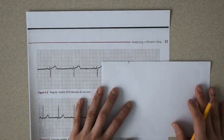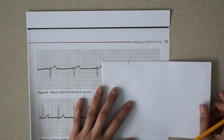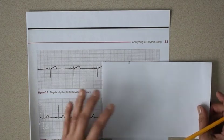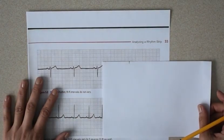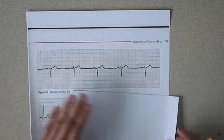By textbook, the regularity of a rhythm is determined by three small squares or more is an irregular rhythm. And so in this case, this being one and a half to two small squares of variability, this rhythm is regular.